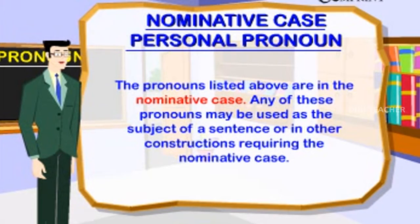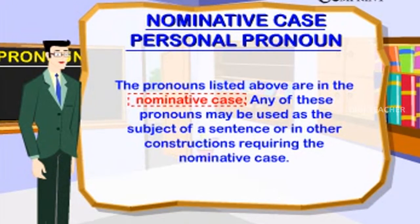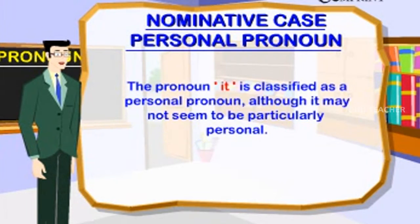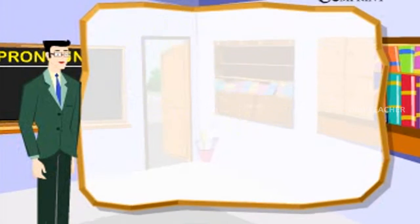Nominative case personal pronouns — singular: I, you, he, she, it; plural: we, you, they. These pronouns may be used as the subject of a sentence. The pronoun 'you' can be singular or plural. The pronoun 'it' is used in both the nominative and objective case and is classified as a personal pronoun, although it may not seem particularly personal.